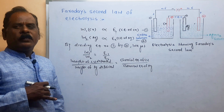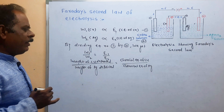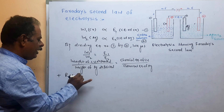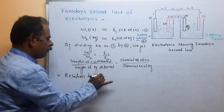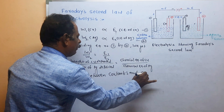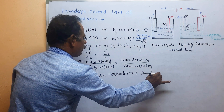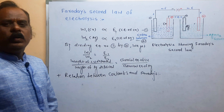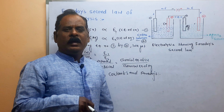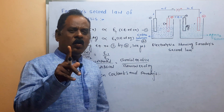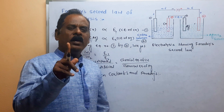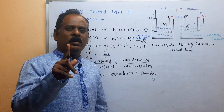Next point: what is the relation between Coulomb and Faraday? One Coulomb of electricity means one ampere of current passed for one second through the electrolytic solution. When you pass one Coulomb of electricity through an electrolytic solution, one gram of electrochemical equivalent (Z) is deposited.